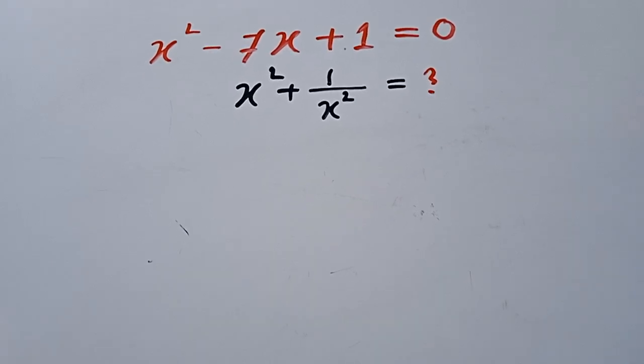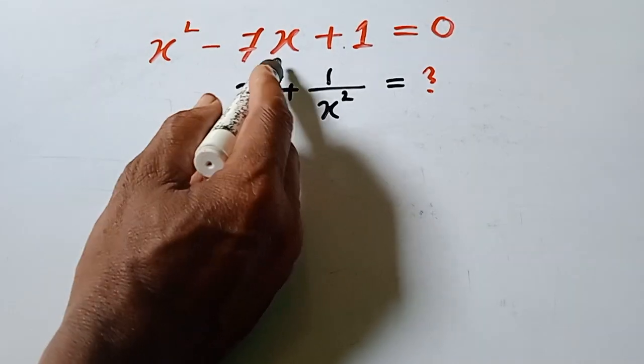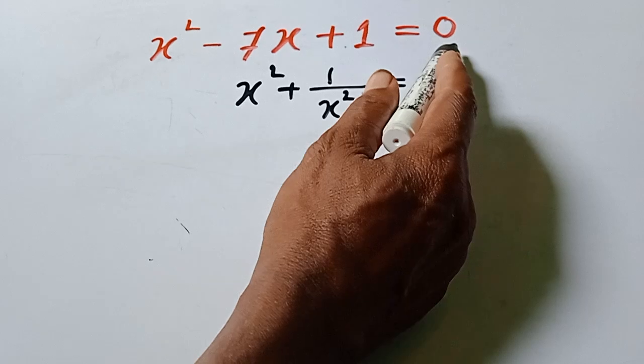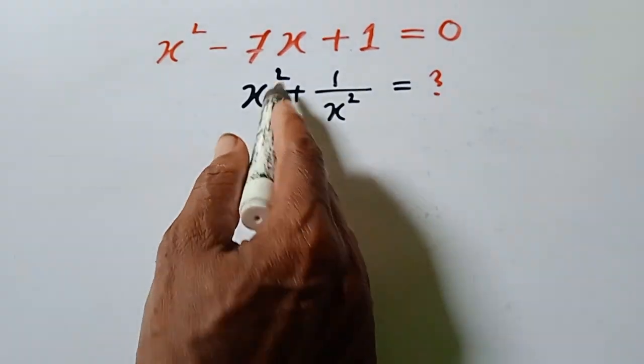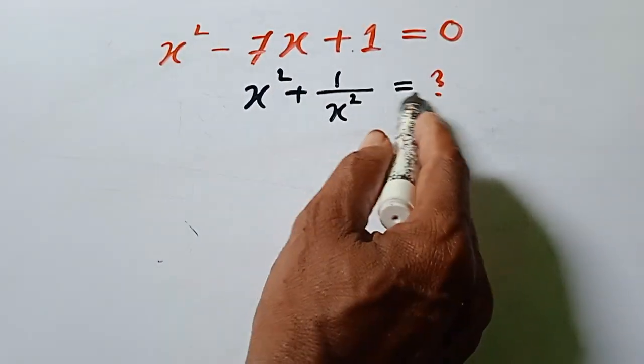A simple algebraic problem. Problem: x square minus 7x plus 1 is equal to 0. Now solve the value of x square plus 1 by x square is equal to what?